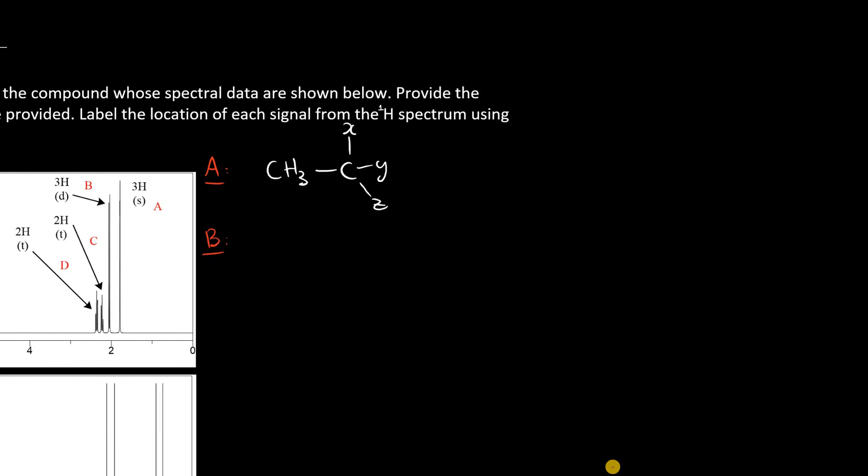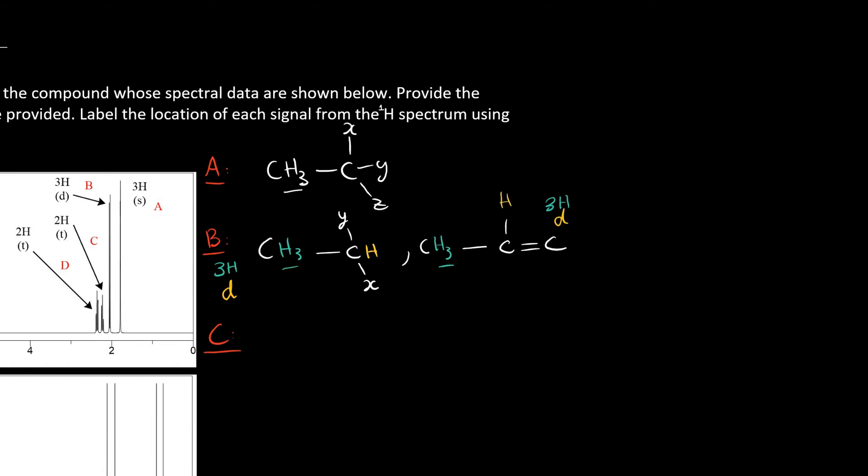Signal B is also a methyl group, but this time we have an adjacent hydrogen, just one. So if we're referencing these hydrogens here, it must be bound to a CH group, which is then bound to two other non-proton bearing groups. Now, it is possible that this methyl group is directly bound to the alkene that we were talking about. So I'll put that in here as well.